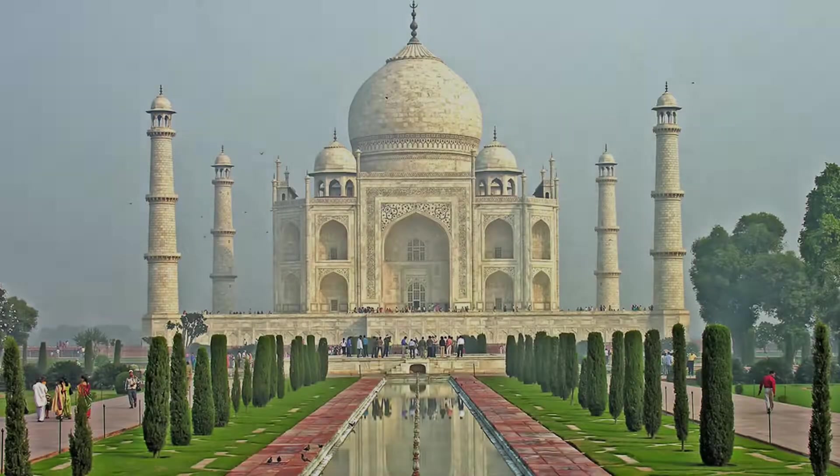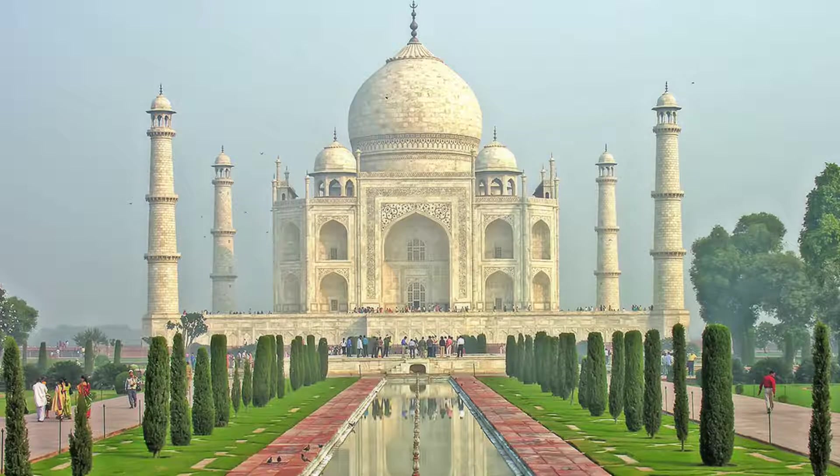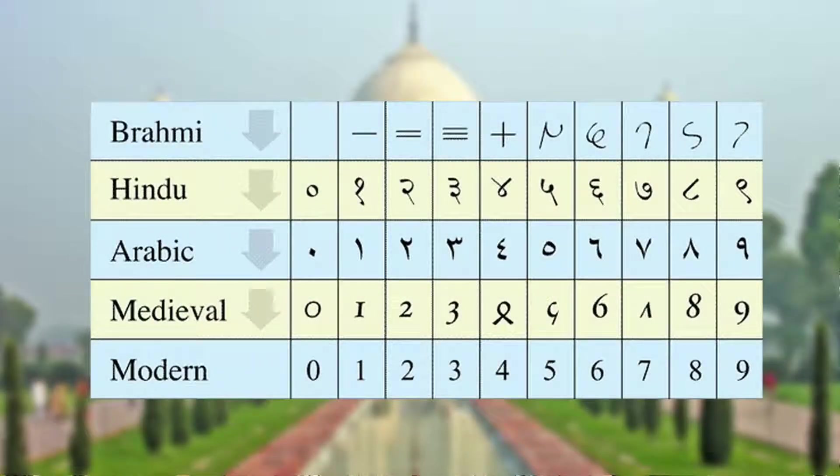According to our history, the numbers were invented by two mathematicians in India who first came up with the combination of ten digits and its place value system.